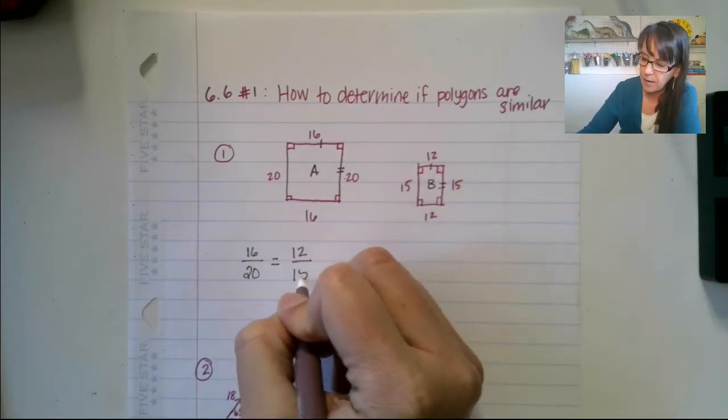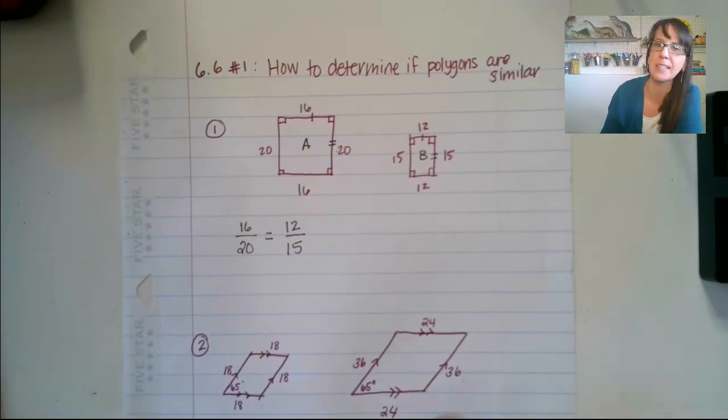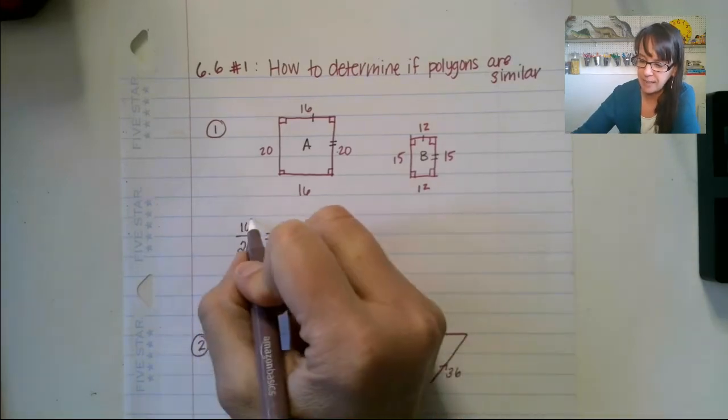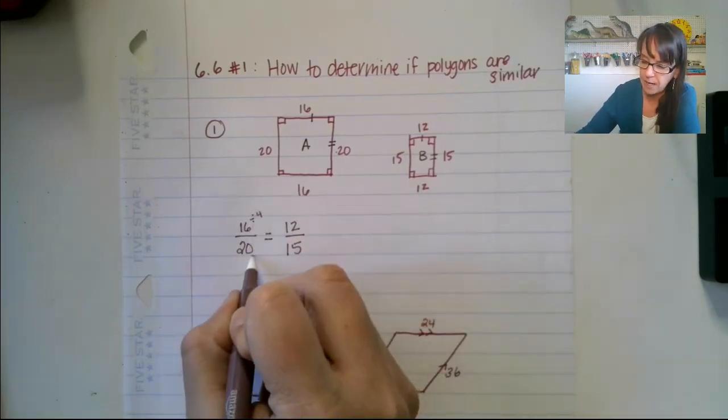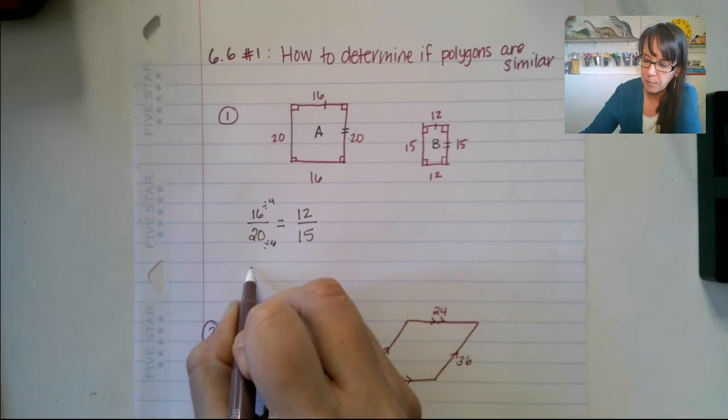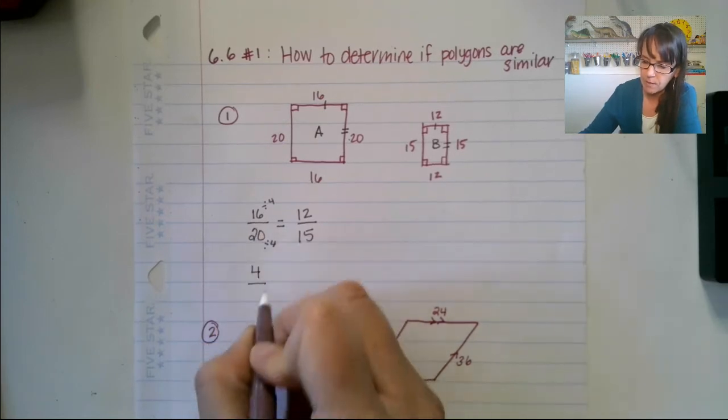Alright, so how do we compare if these ratios are the same? We have two different ways of doing this. The easiest, I think, is to reduce those fractions. For example, if we divide this by 4 on the top and bottom, we would end up with 4 over 5.